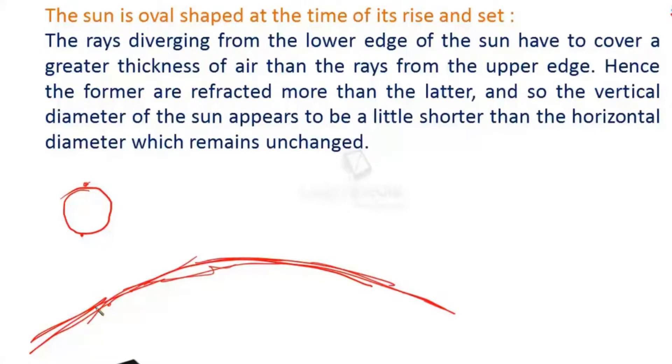And the lower edge of the sun is closer to the atmosphere. So light rays moving from the lower edge of the sun has to cover more distance in air, and light rays from the top of the sun has to cover less distance in air.